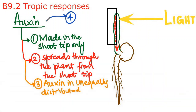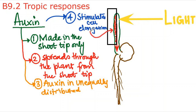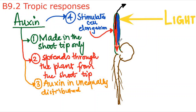Auxin then stimulates cell elongation, but only in the regions which are in the dark. So the half of the shoot with a lot of auxin accumulated shows accelerated growth due to cell elongation, while the section in the light has no auxin and grows slower. This slower growth on the light side causes the stem to start bending in the direction from where the light is coming.